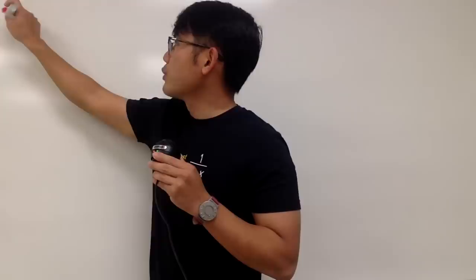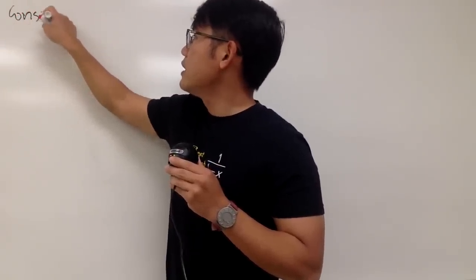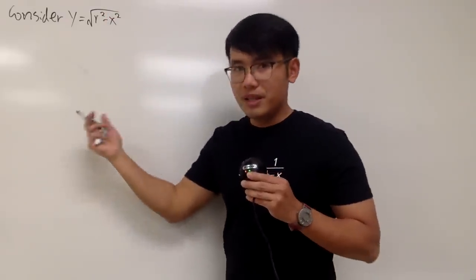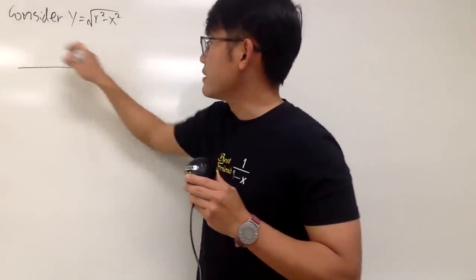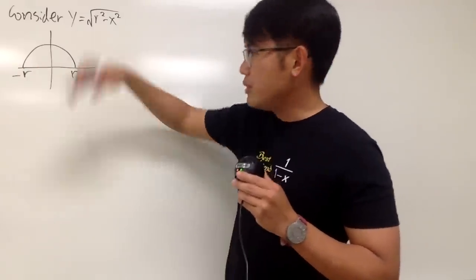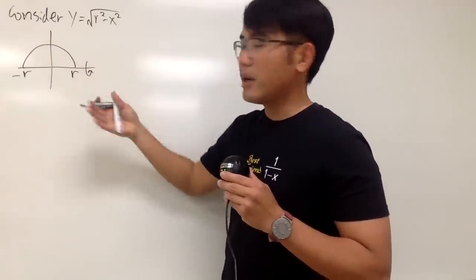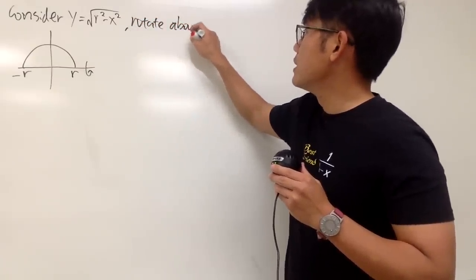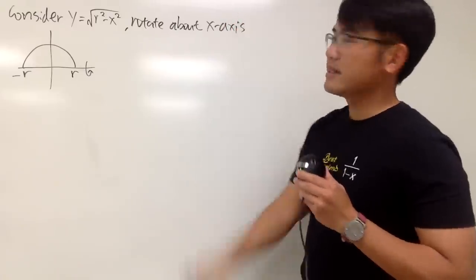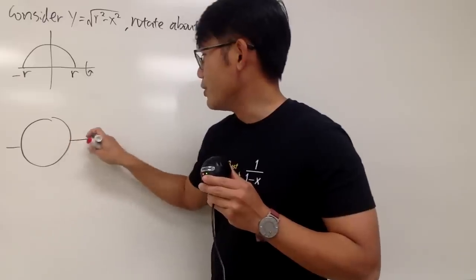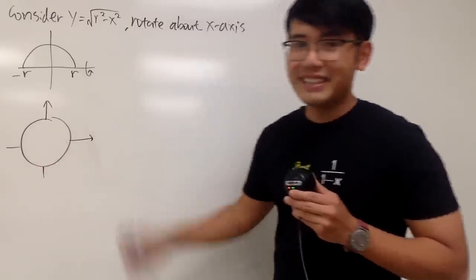Here we go. We will have to consider the equation of a semicircle. We are going to consider y equal to the square root of r squared minus x squared, because this right here will give us the semicircle. And of course we are going to go from negative r to r. To get a 3D version, we will have to take this and rotate about the x-axis. So the result is just a 3D ball.